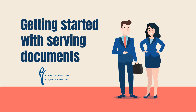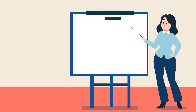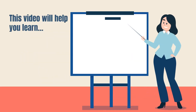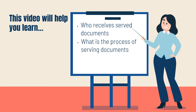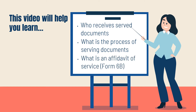This video will help explain what it means to serve documents and what steps are involved in serving documents. This is the first of three videos from Legal Aid Ontario. After watching this video, you should be able to know who receives the served documents and under what circumstances, know where to look to find out the timelines and deadlines for serving documents, and understand what an Affidavit of Service is, also called Form 6B, how to complete one, and how to get a commissioner to sign it.